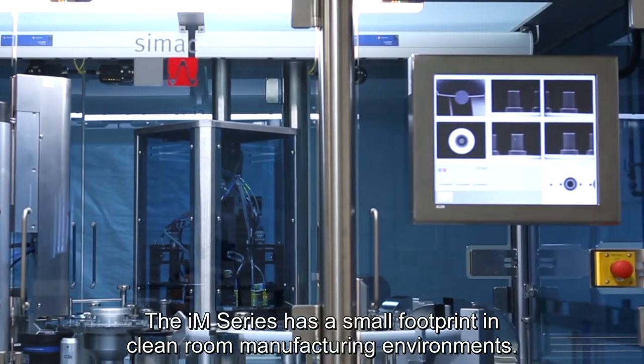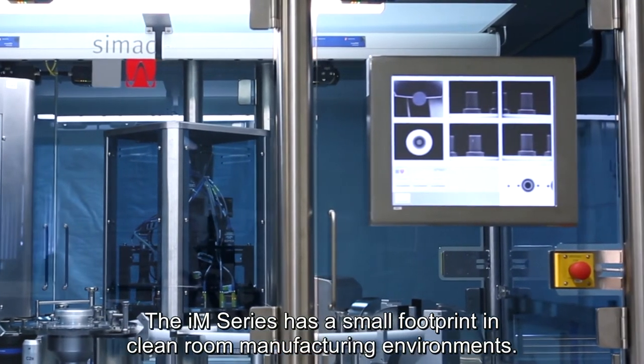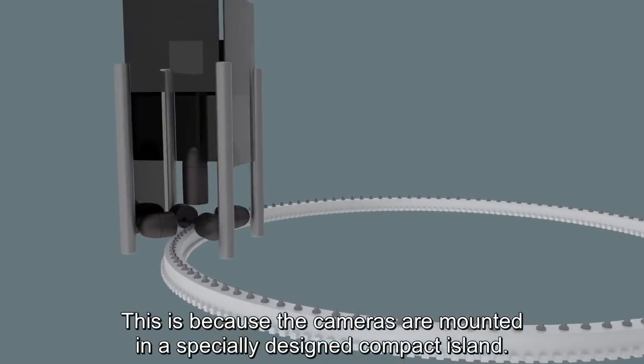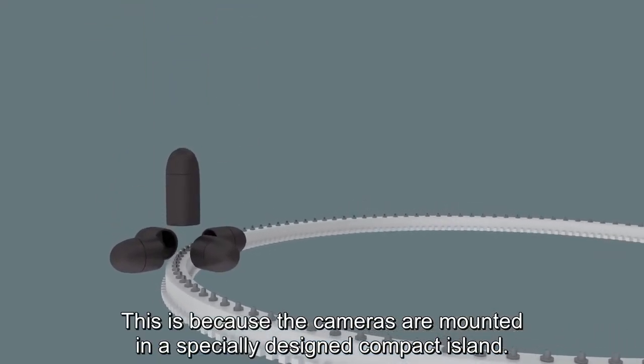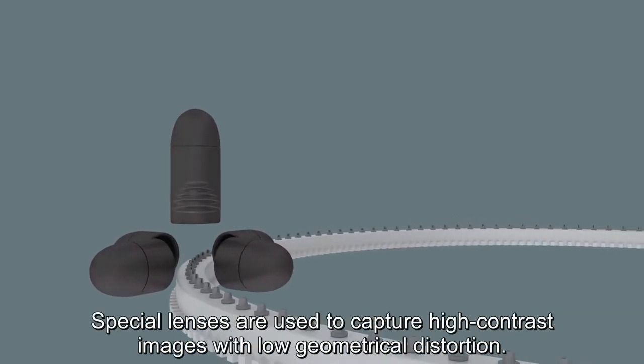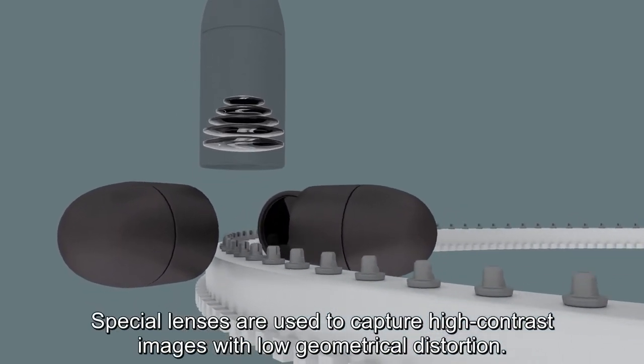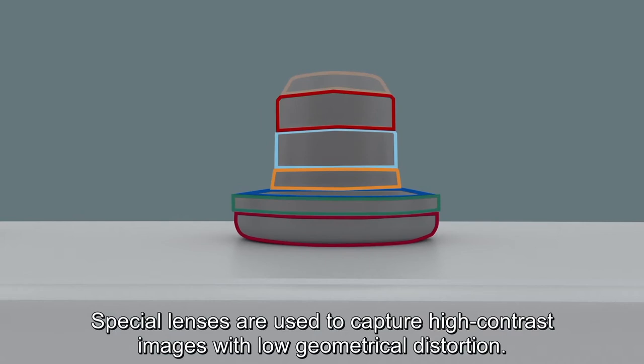The IM series has a small footprint in clean room manufacturing environments. This is because the cameras are mounted in a specially designed compact island. Special lenses are used to capture high-contrast images with low geometrical distortion.